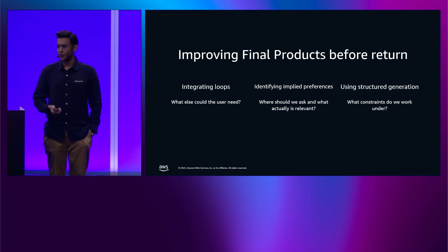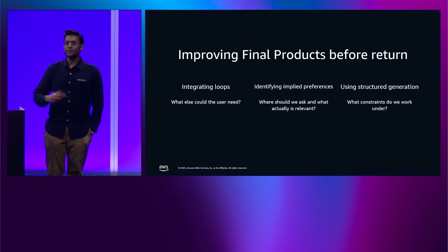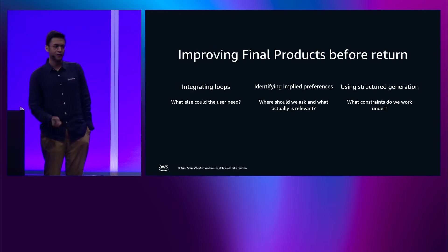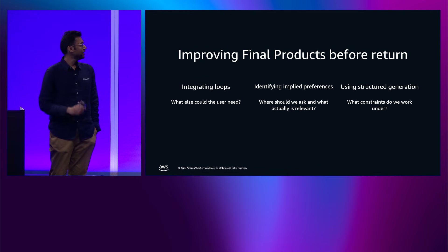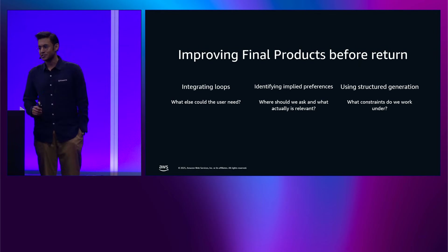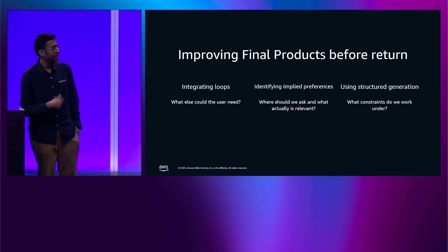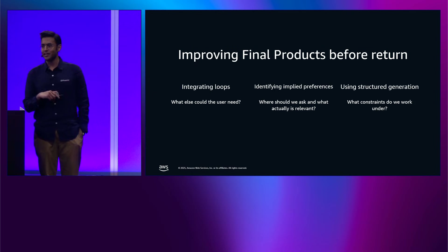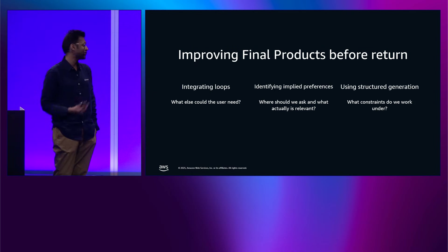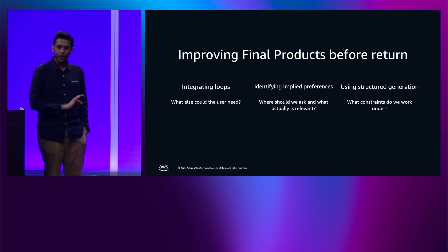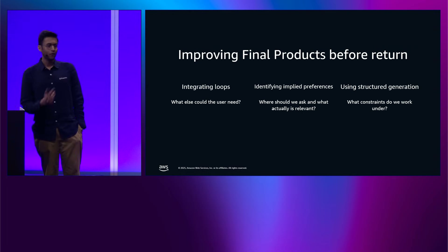There are some techniques helpful for this situation. First, think about looping your retrieval — what else could the user need, and could we exchange some latency for more relevant information? Second, identifying implied preferences — users are notoriously bad at describing what they want in the first interaction. So you need an architecture that understands what information to follow up on and what of that information is actually useful given the data sources you're working with. Finally, use structured generation — constrain what you send back to the user, presenting it in a parsable, analyzable format.